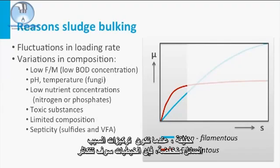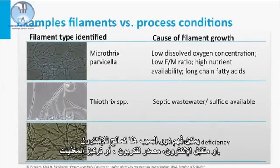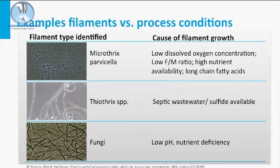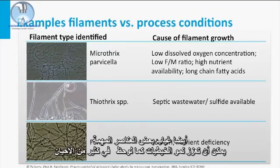Indeed, as substrate concentrations in the bulk liquid are low, the filaments will proliferate. Substrate can be understood here as electron donor, electron acceptor, C source, or nutrient concentration. Also, the absence of certain trace elements can enhance filamentous growth, as more often observed in industrial wastewaters than in sewage treatment.